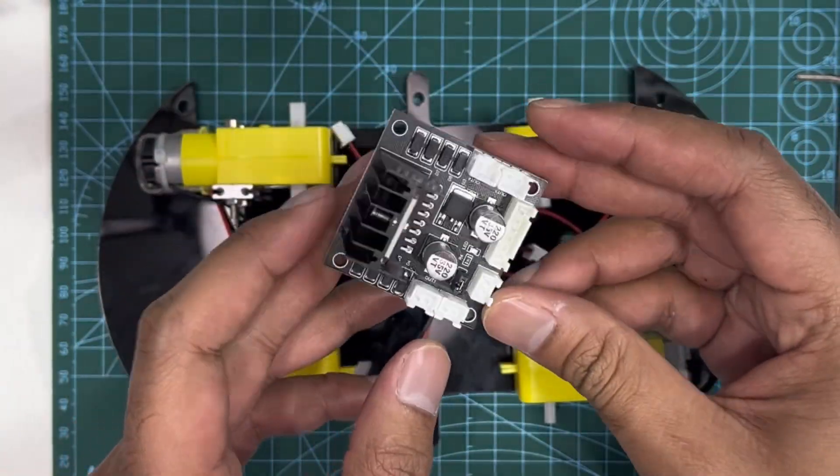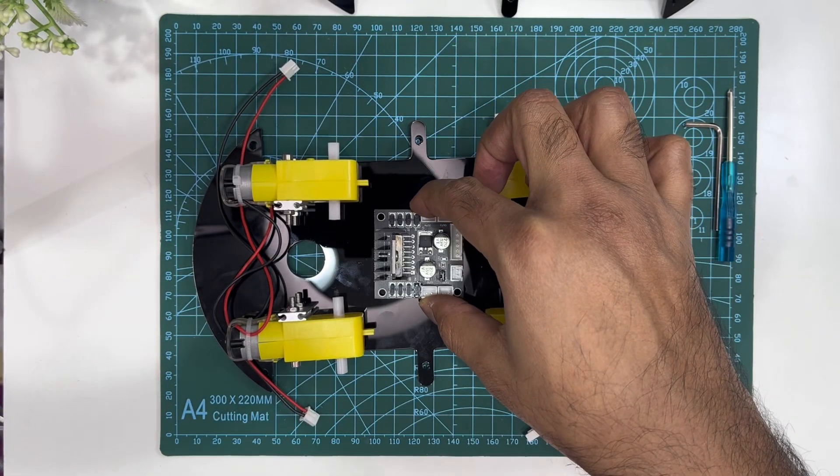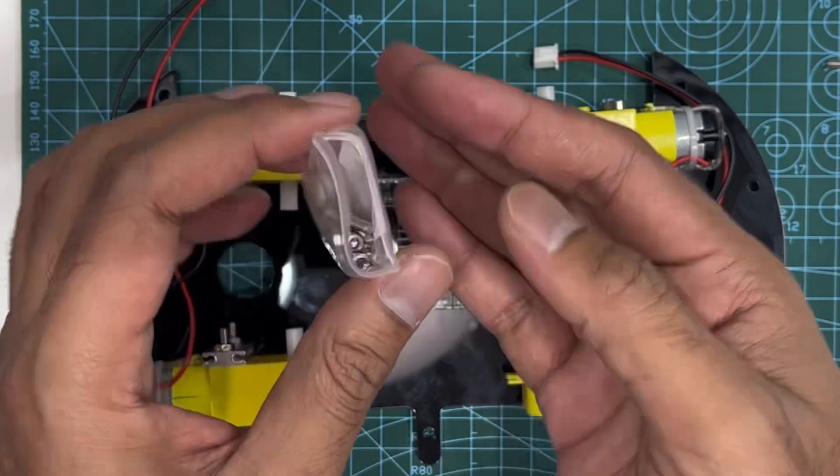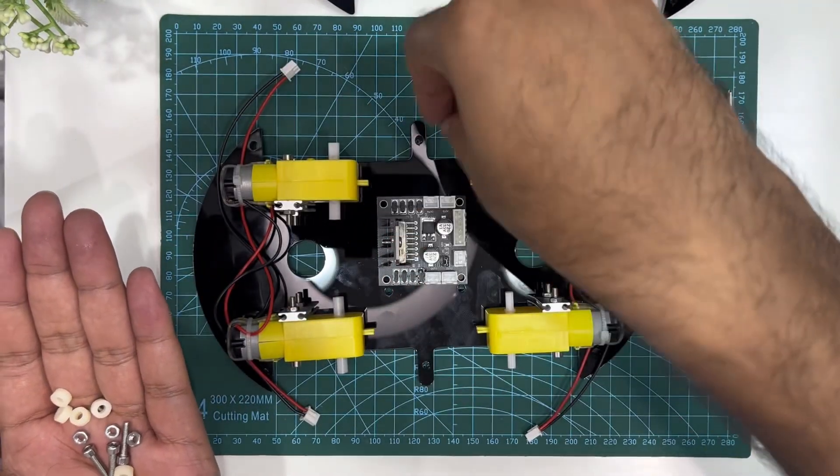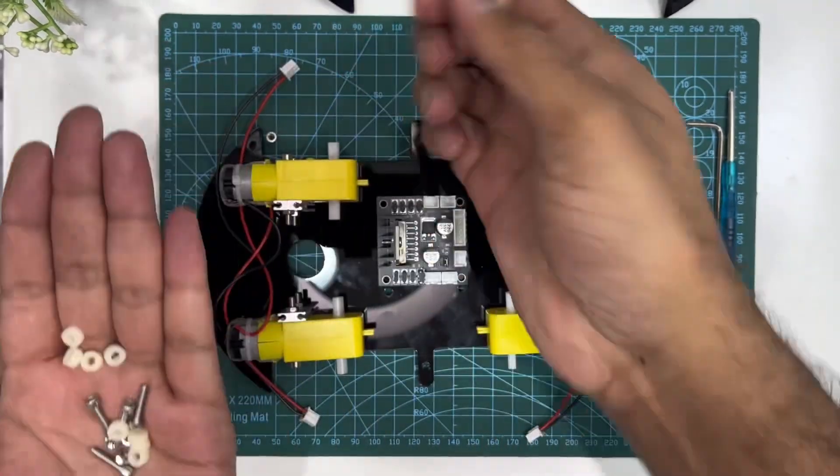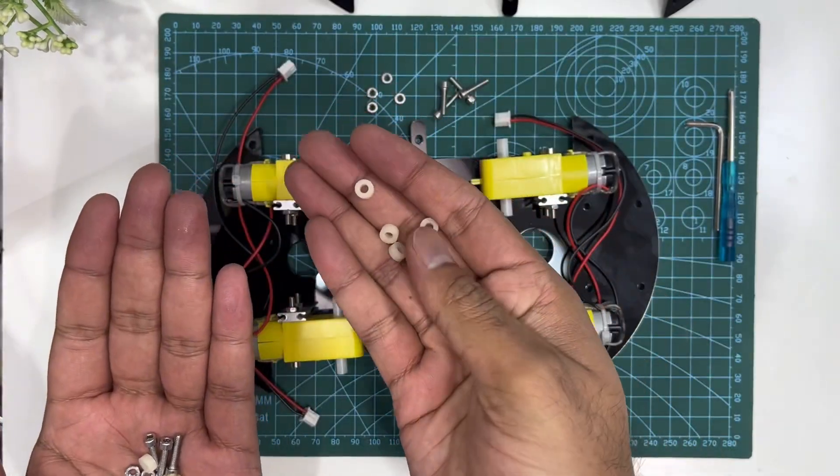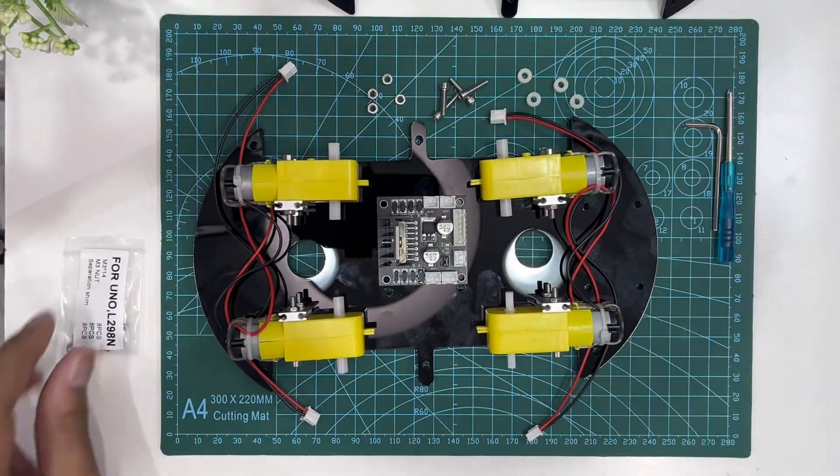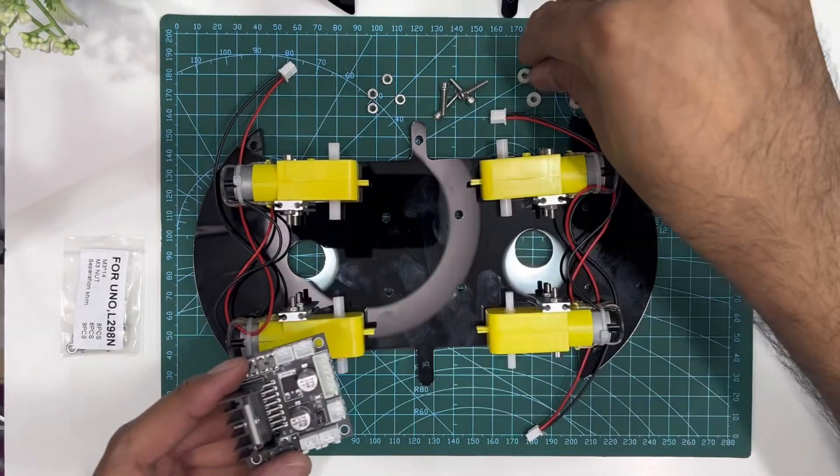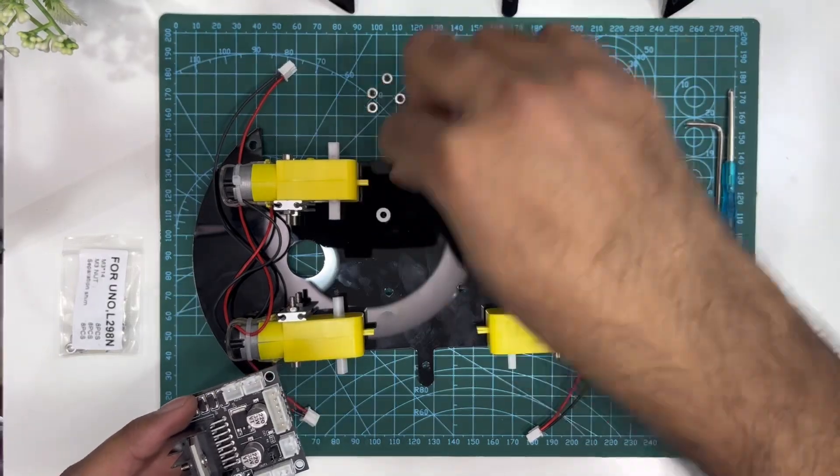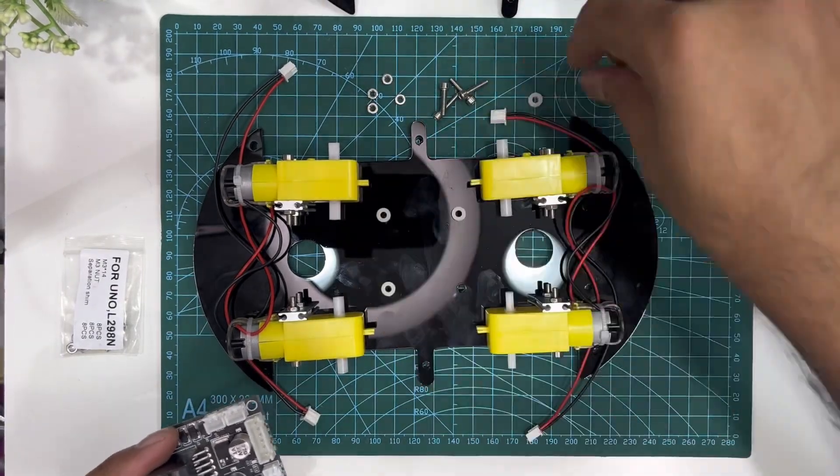Next is the L298N motor driver. We will need four M3 by 14 hexagon socket screws, four M3 nuts, and four separation shims. Pay attention to the direction of the motor driver when mounting it. The shims help prevent short circuits.